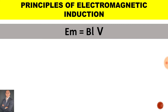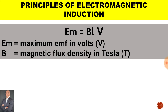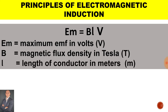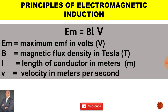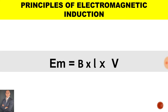Looking at each part in this equation: EM is the maximum EMF in volts, B is the magnetic flux density in Tesla, L is the length of the conductor in meters, and V is the velocity measured in meters per second.